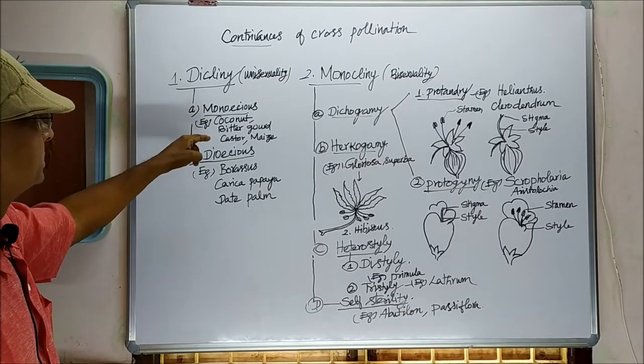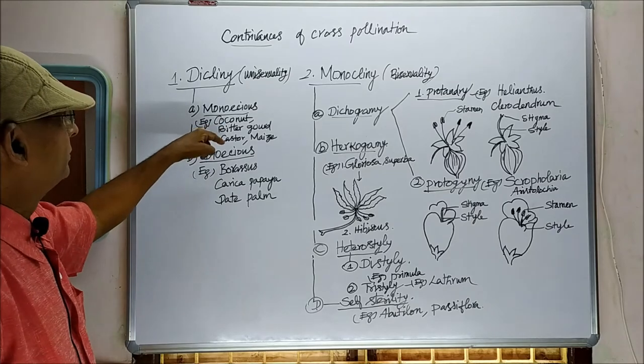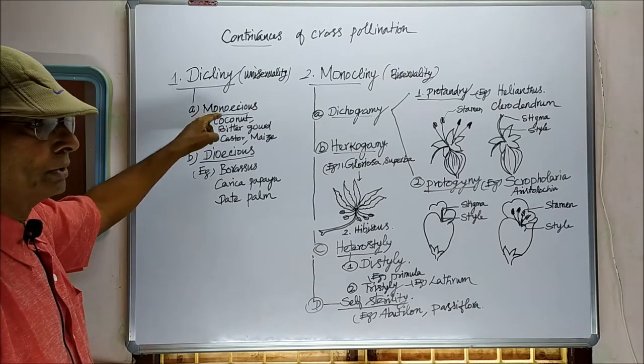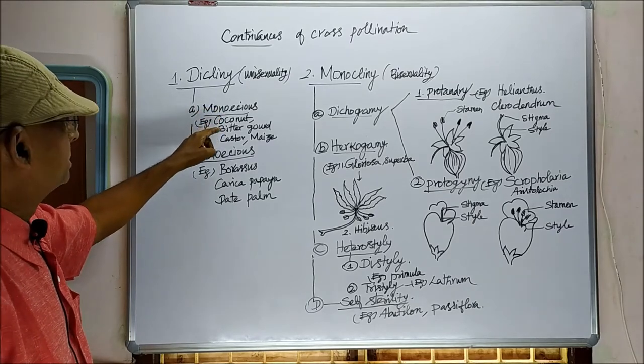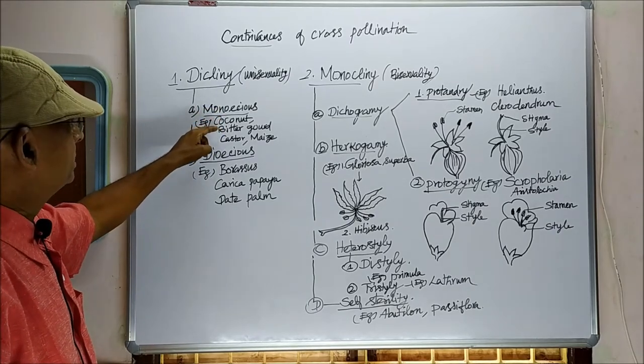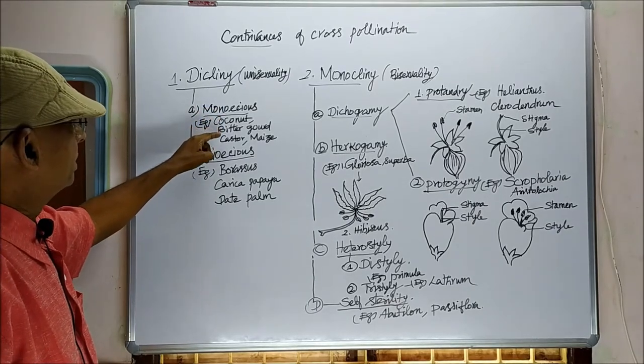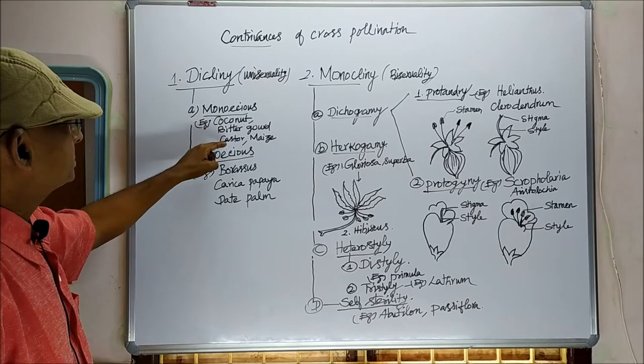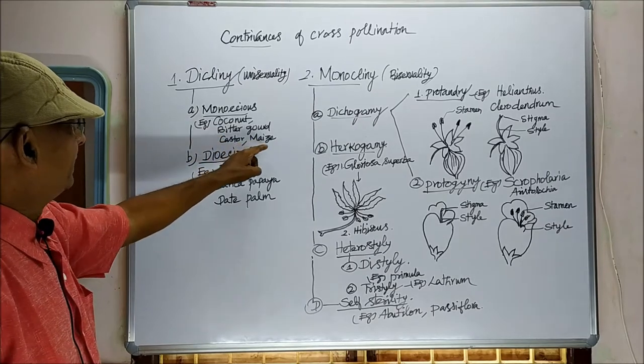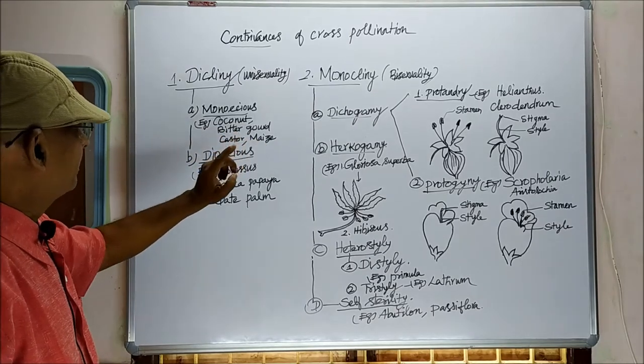For monoecious, the plants which show monoecious condition are coconut, bitter gourd, castor, maize, etc.